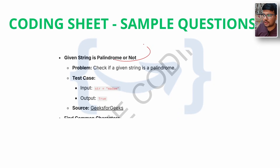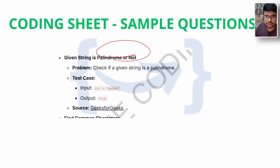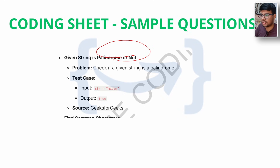One of the questions is palindrome or not. You can argue this is a very easy question, but with palindrome, many new questions can be formed — such as Armstrong number and pattern-wise questions — where you need to traverse a string or number from front or back to figure out what needs to be done. Try to focus on the patterns covered in the sheet.